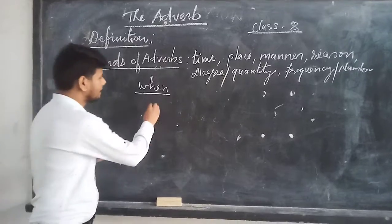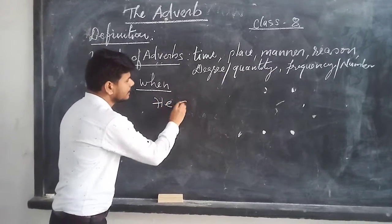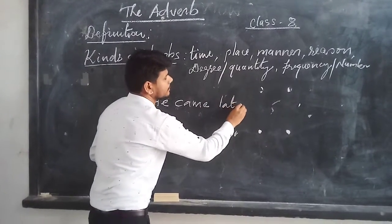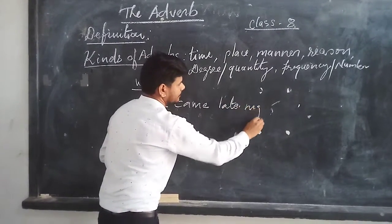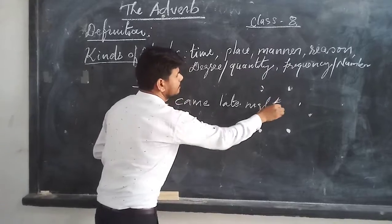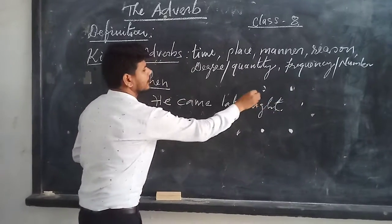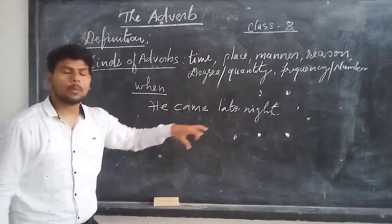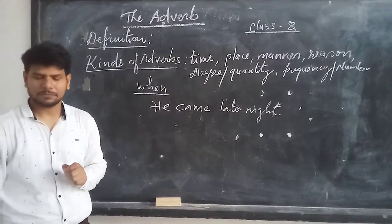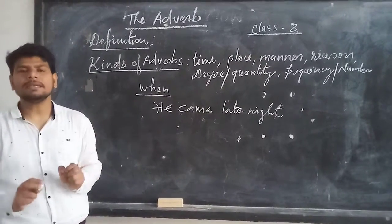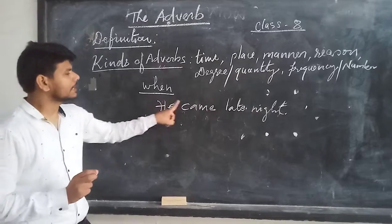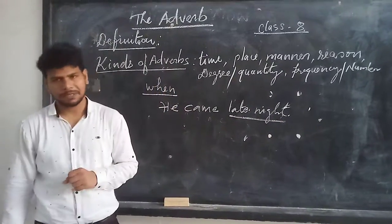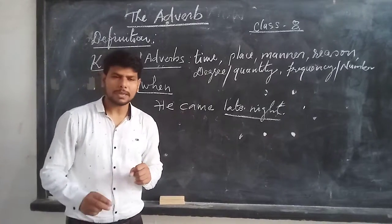For example, he came late night. So now the question is: when did he come? We ask the question 'when did he come?' and we say he came late night. So 'late night' is the adverb here.